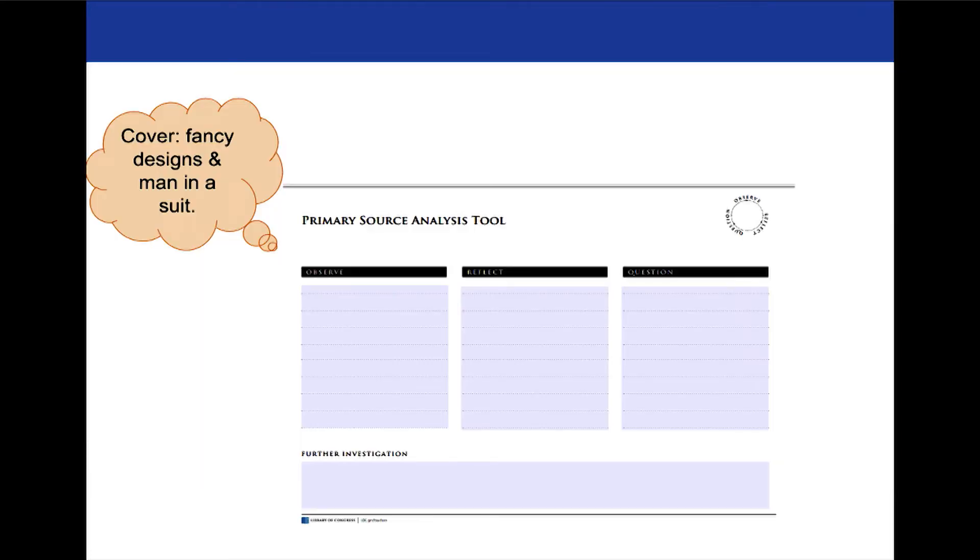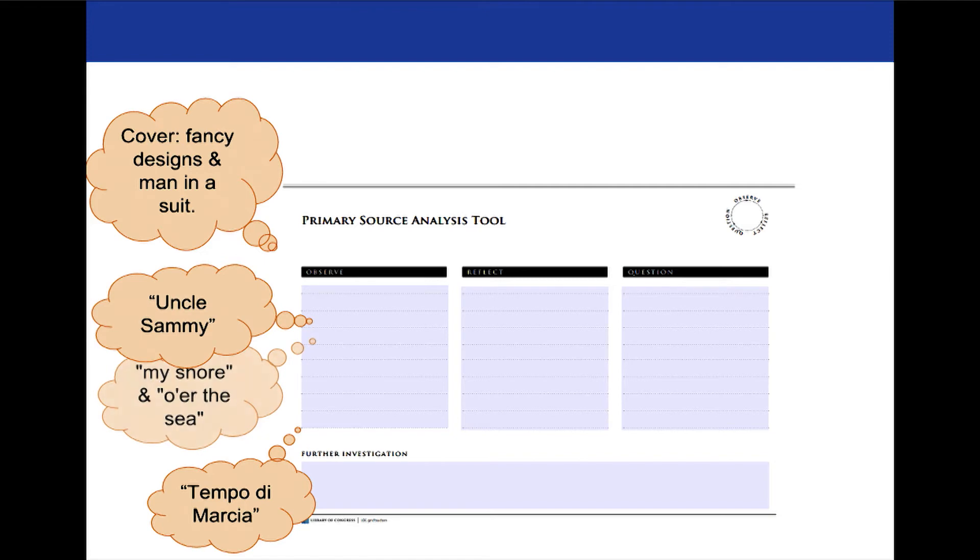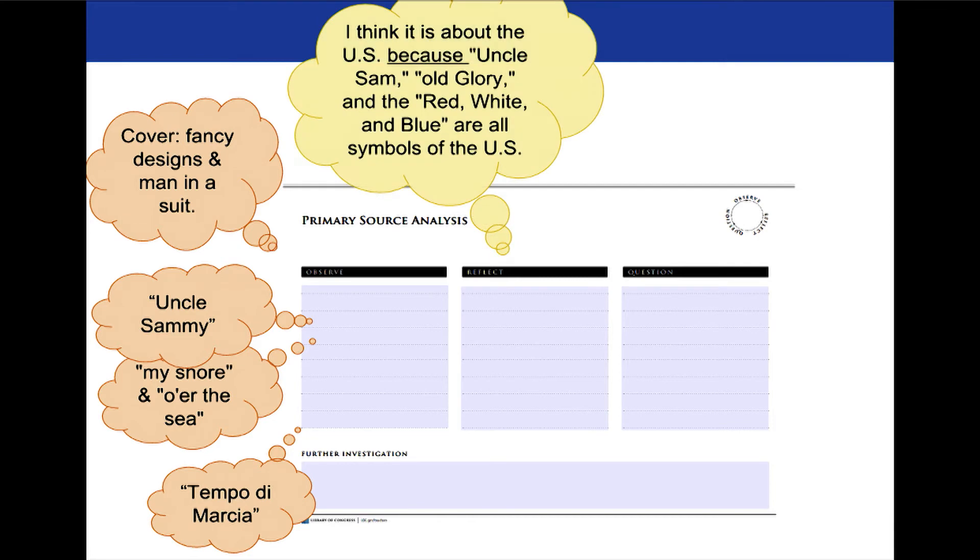Let's go back to our observe-reflect-question tool and see if we can fill this in. What are some of the things that we noticed? We noticed a fancy design, a man in a suit, the Tempo di Marcia, and some of those other references—the language they were using that might indicate a place or a person.